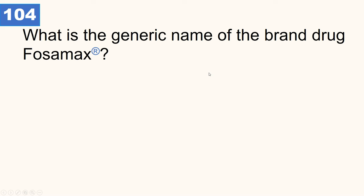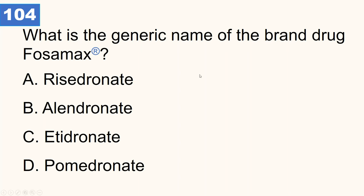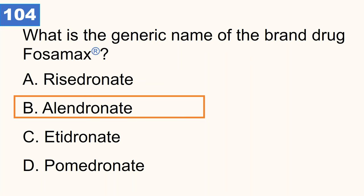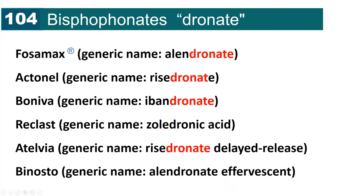What is the generic name of the brand drug Fosamax? Fosamax is used for osteoporosis. The generic name is alendronate. The suffix '-dronate' indicates the bisphosphonate class of drugs, which are primarily used for osteoporosis.